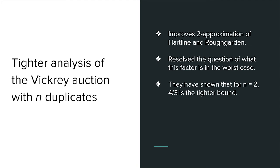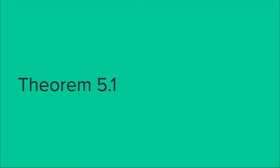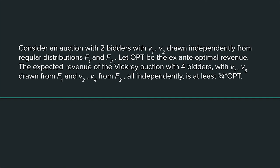Now that we have shown ways of duplicating bidders that yield at least a constant fraction of the optimal revenue, what is the best revenue achievable, and is there some upper bound? Using a novel technique involving look-ahead auctions, the authors show that for an auction with two bidders drawn independently from two regular distributions, we can get at least 3/4 of the optimal revenue with an auction with four bidders — one bidder duplicated from each distribution.